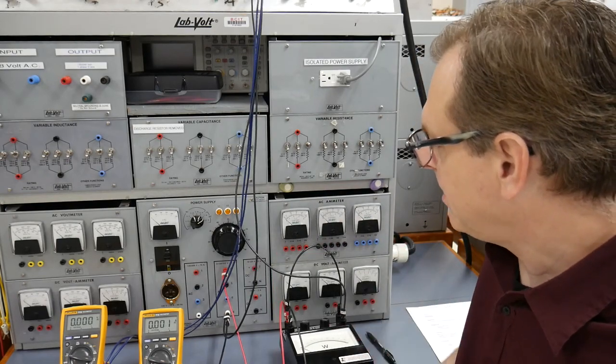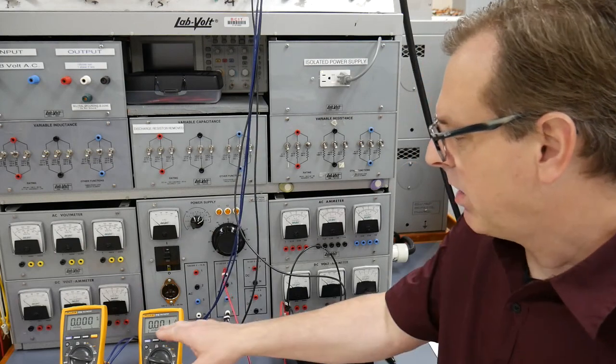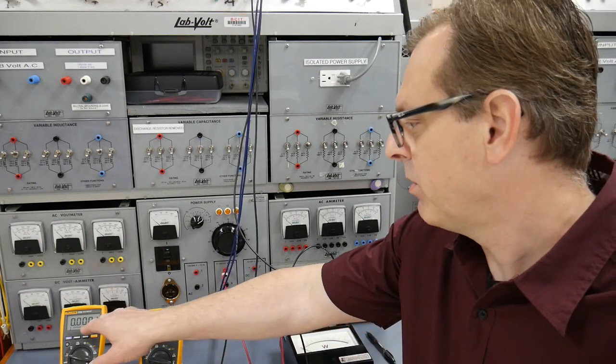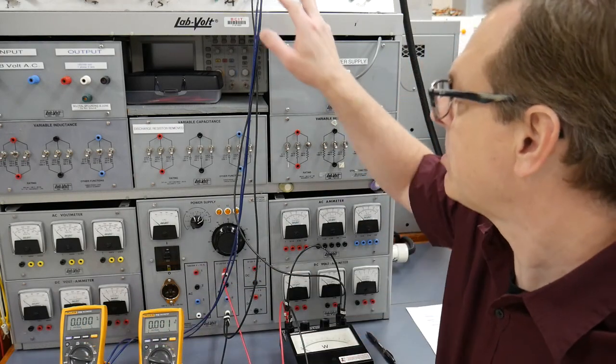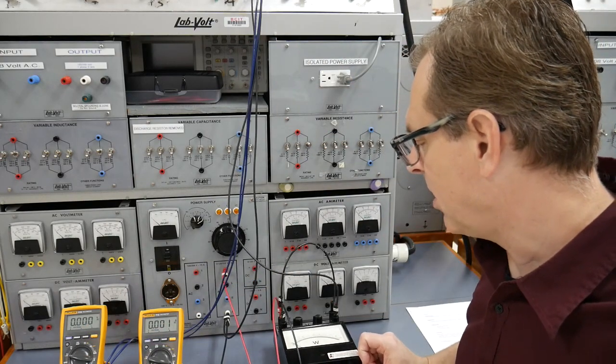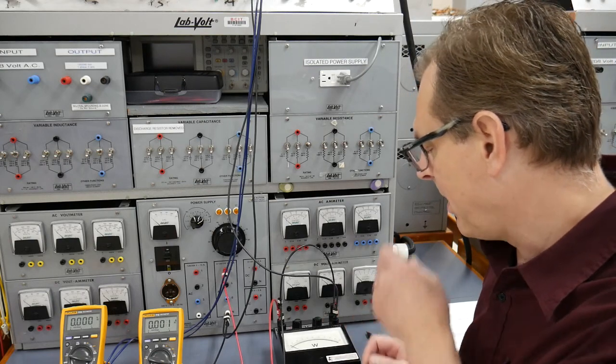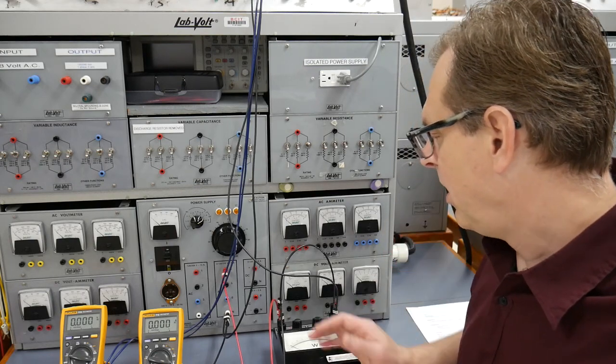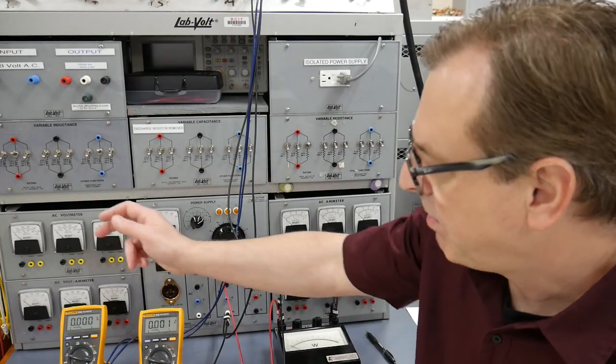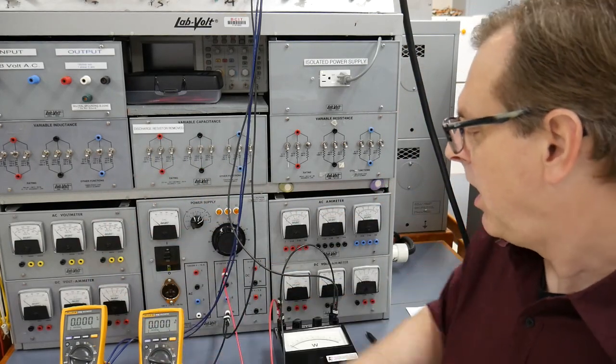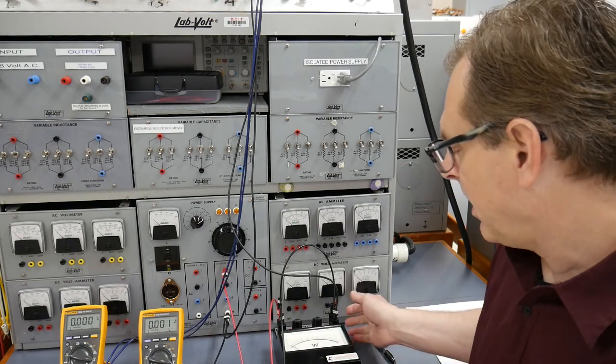I've connected it up to the AC circuit right now. I've got a Fluke multimeter measuring current, a Fluke multimeter measuring the voltage potential across the cone heater up top, and then this watt meter here that is going to measure the actual power. So we can compare the voltage multiplied by the current to get power and then also look at the watt meter reading.